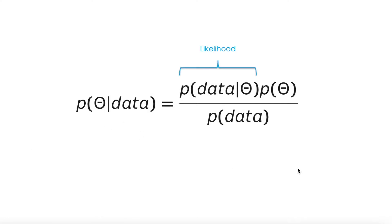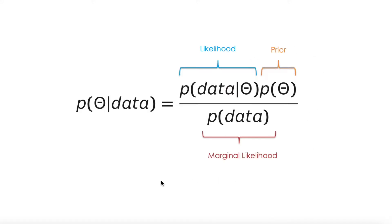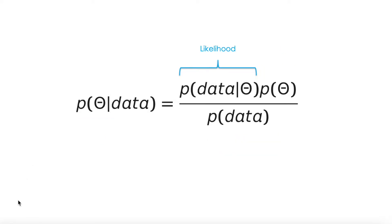Each of these terms has a name, and we are going to see each of them: the likelihood, the prior, and the marginal likelihood. And of course, this is our posterior. So what is the likelihood?